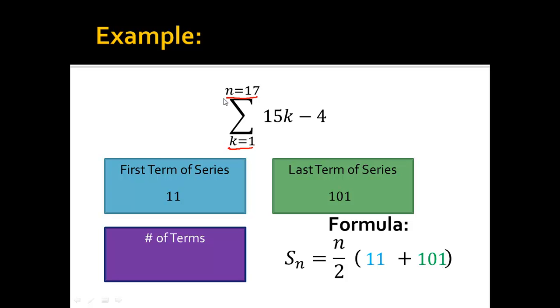Now, the number of terms. I'm going from the first term, which is what I got from here, and that little piece of information. I'm going up to the 17th, which is what I got from here, that little piece of information. So n is going to be equal to 17. There's where my 17 goes.